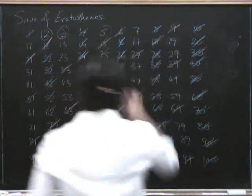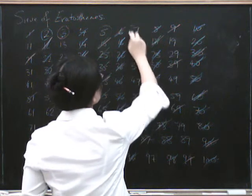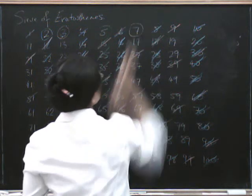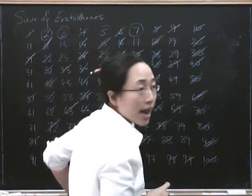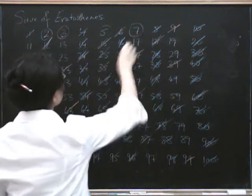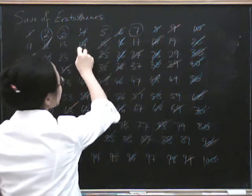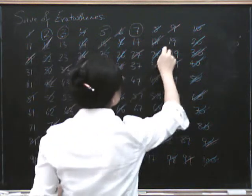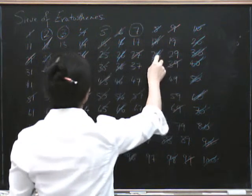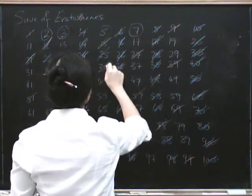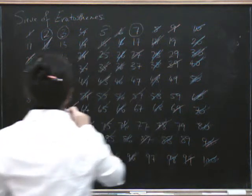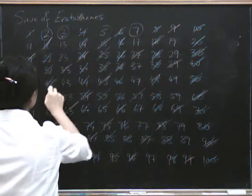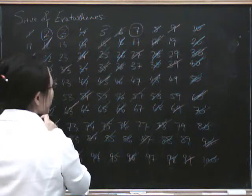Okay, have you done 7? 7 is the next one that's available, so we circle 7 to show it's prime, and now we're going to cross out everything that's divisible by 7. So we get 7, 14 which had already gone anyway, 21 had already gone, 28.